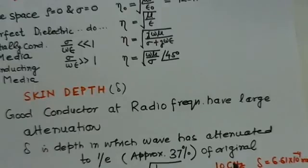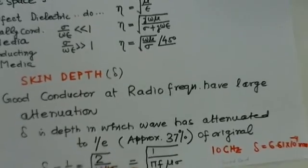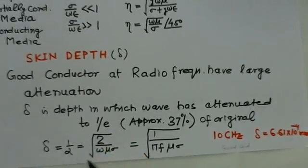This skin depth is normally very small for microwave frequencies or high frequencies. The governing relation is δ = 1/α = √(2/(ωμσ)) = 1/√(πfμσ). This means if the frequencies are higher, the skin depth is much smaller.